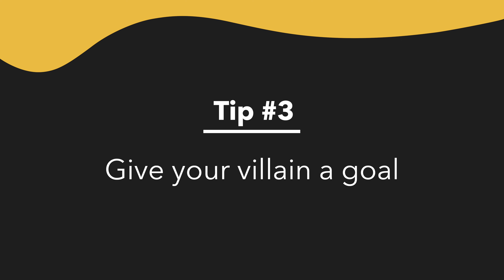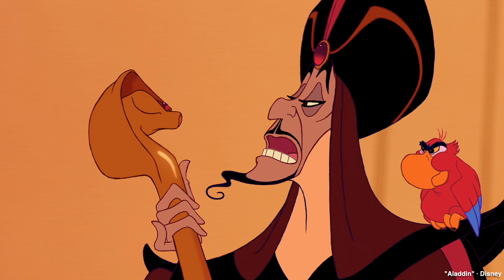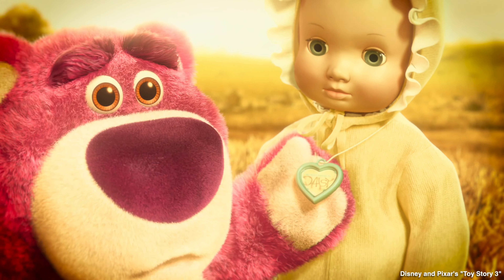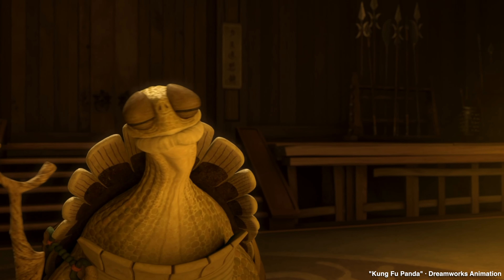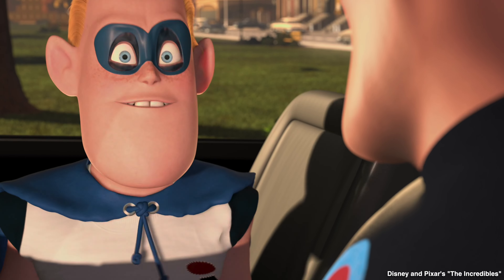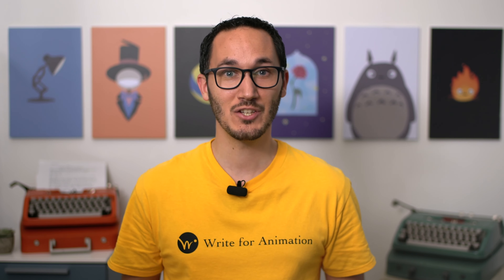Tip number three: Give your villain a goal. A goal is one of the keys to writing a great villain — they must want something that leads them to take evil actions. Cruella wants a coat, Ursula wants to dethrone Triton, Jafar wants power. The motivations behind this goal reveal a lot about their character, and a good way to show a villain's motivation is through their backstory. Lotso was abandoned, Tai Lung was rejected by Oogway, Syndrome was disappointed by Mr. Incredible. Maybe you decide not to include this backstory in your film — that's okay, but writing it down will help you as a writer understand your antagonist's motivations better.